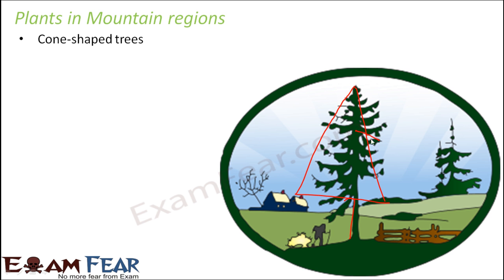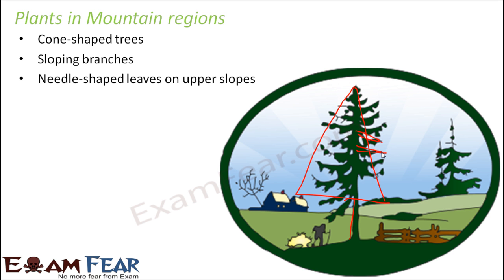The leaves are also shaped like needles — very thin leaves, not very broad. Sloping branches also help water or snow to slide off easily, so that's the advantage of having sloping branches.